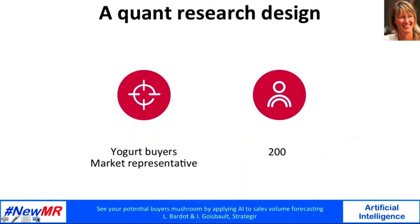So what we did was propose a typical quant survey with about 200 respondents — 200 consumers, buyers of yogurts — representative of the category in terms of age, sex, and brands bought.